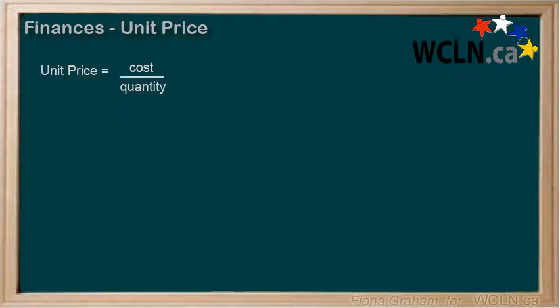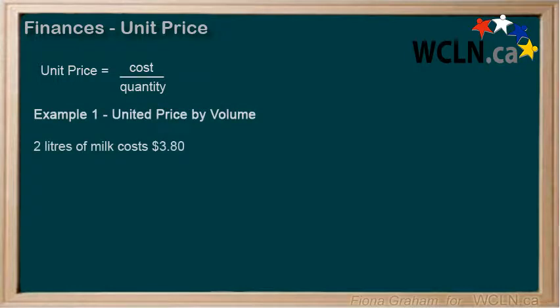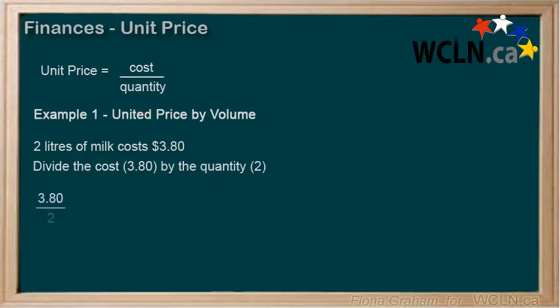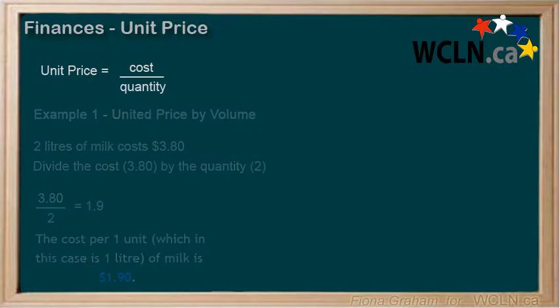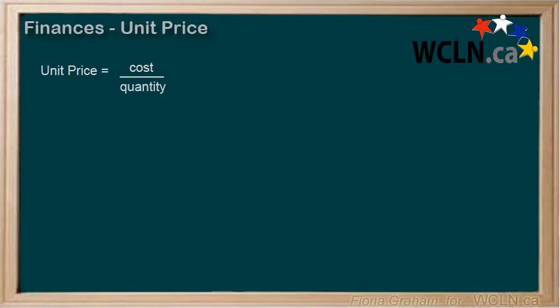Let's look at some examples. Let's say you're buying 2 liters of milk that cost $3.80. We would divide the cost, $3.80, by the quantity, 2 liters. So 3.8 divided by 2 gives us 1.9. So the cost per 1 liter of milk would be $1.90.